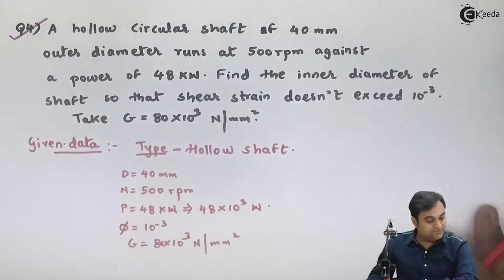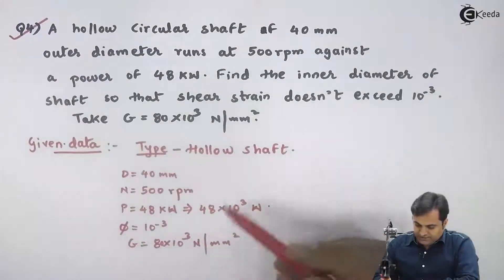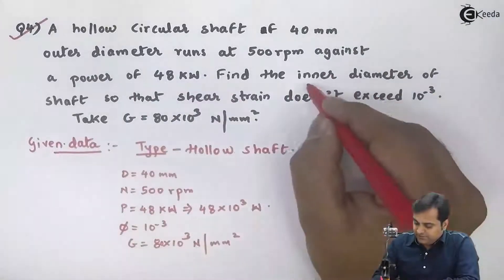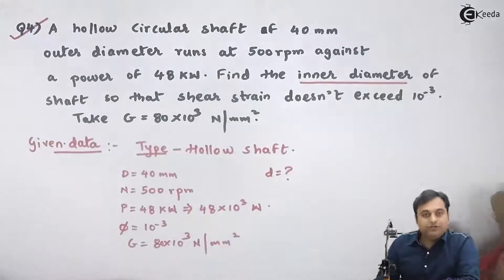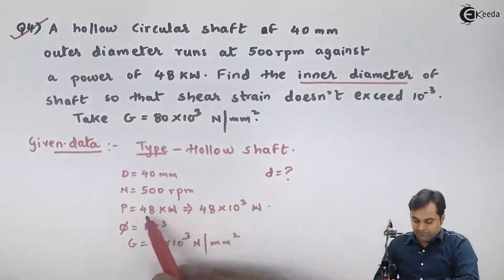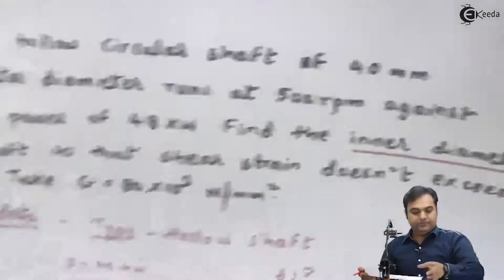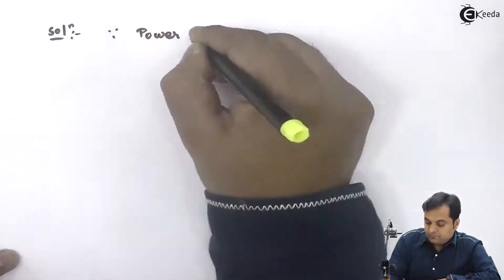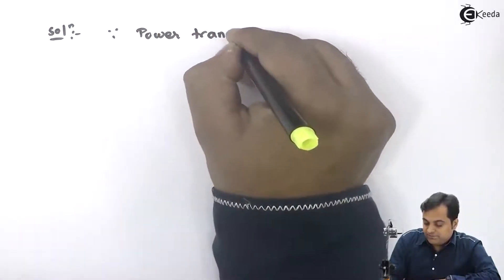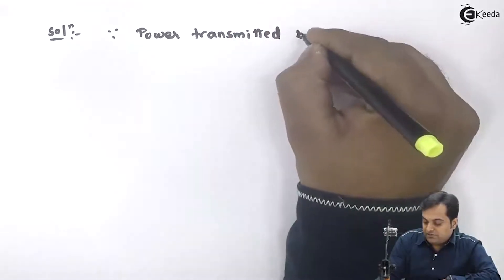Now in this case, they are telling us to calculate the inner diameter, so I'll denote inner diameter by small d. Since power and rpm are given, let us try to get the torque first. Solution: since power transmitted by shaft is given by: